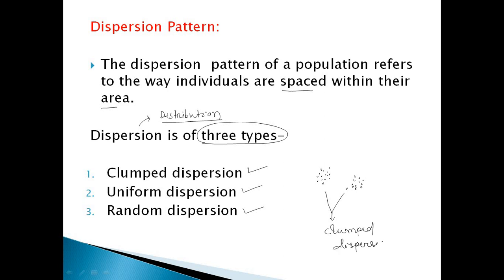The second type is uniform dispersion. The population or species are dispersed uniformly, meaning the gap between two species or the habitat range between two species has a certain limit, so they can access resources like food, space, and other biotic factors equally. That is uniform dispersion. For random dispersion, there is no certain space among organisms — they are distributed randomly across a habitat.